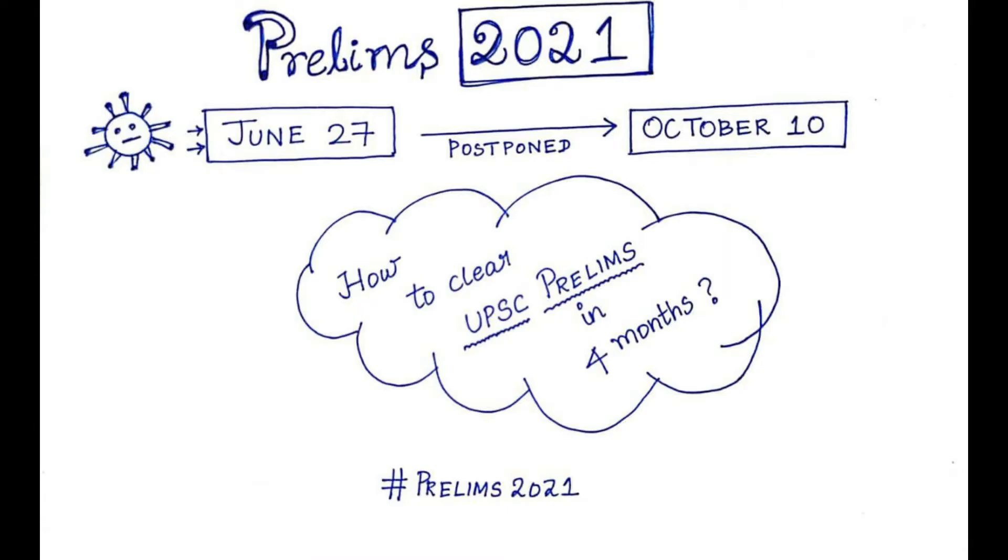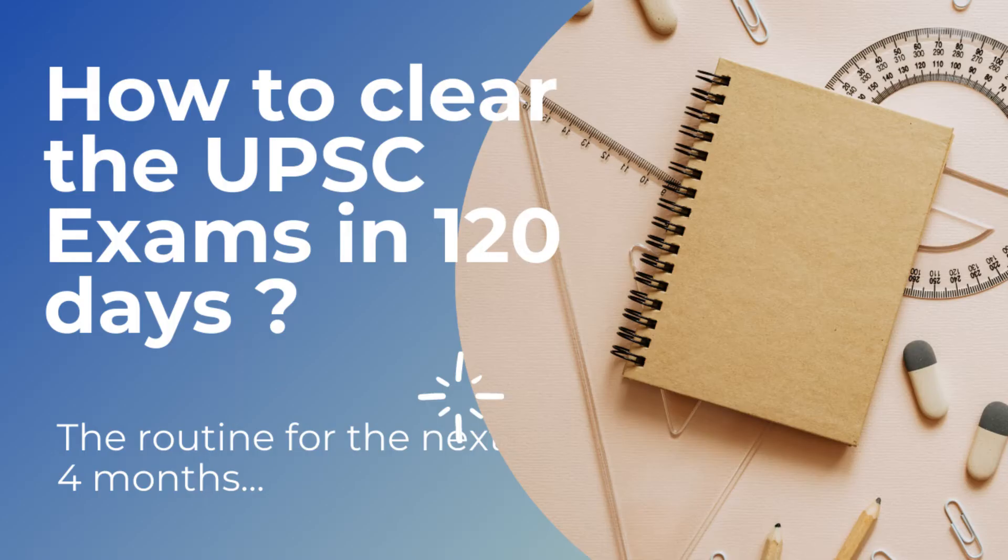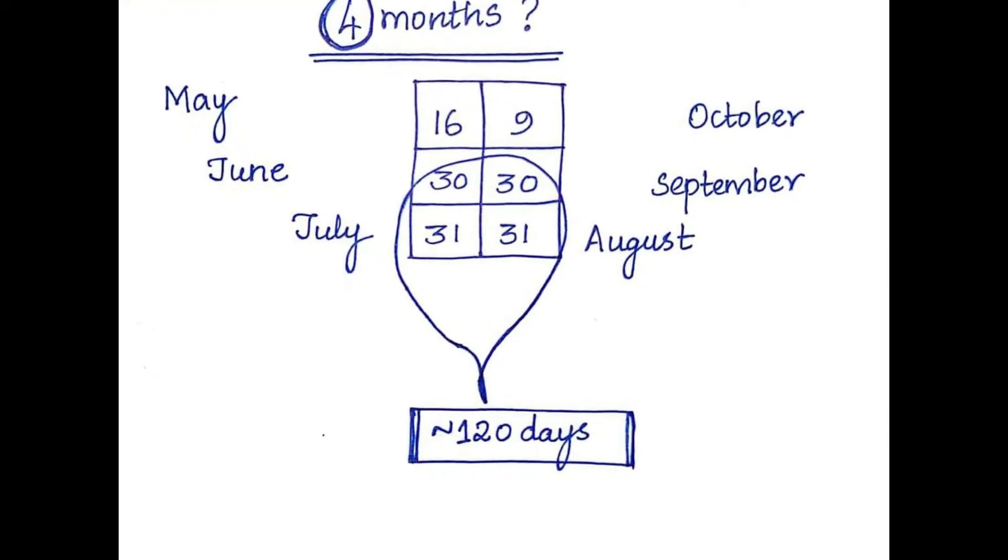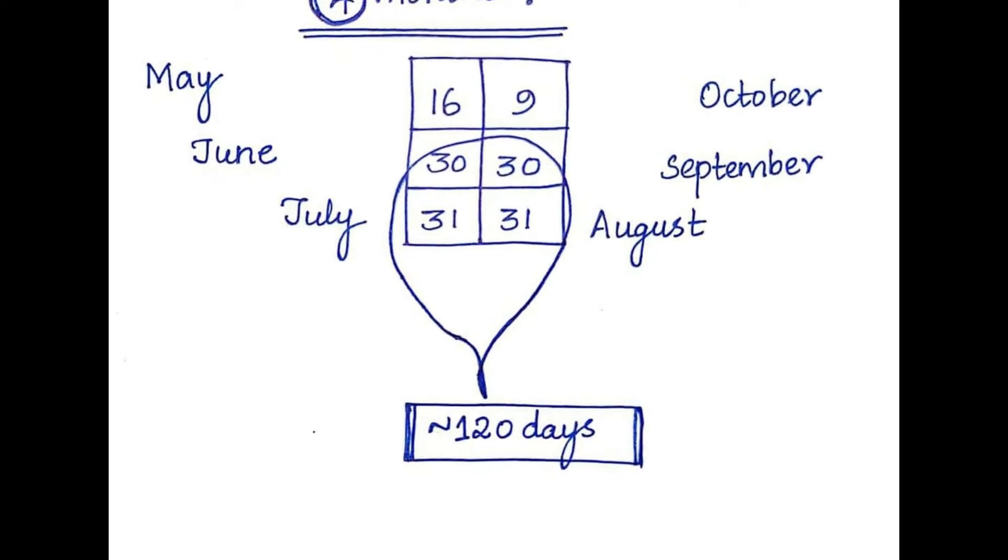Now, as we know that prelims 2021 has been postponed from June 27 to October 10, we have clear 4 months left for UPSC prelims. And that brought me here to explain how to clear UPSC prelims in 4 months. Well, do we really have 4 months? Let's calculate.